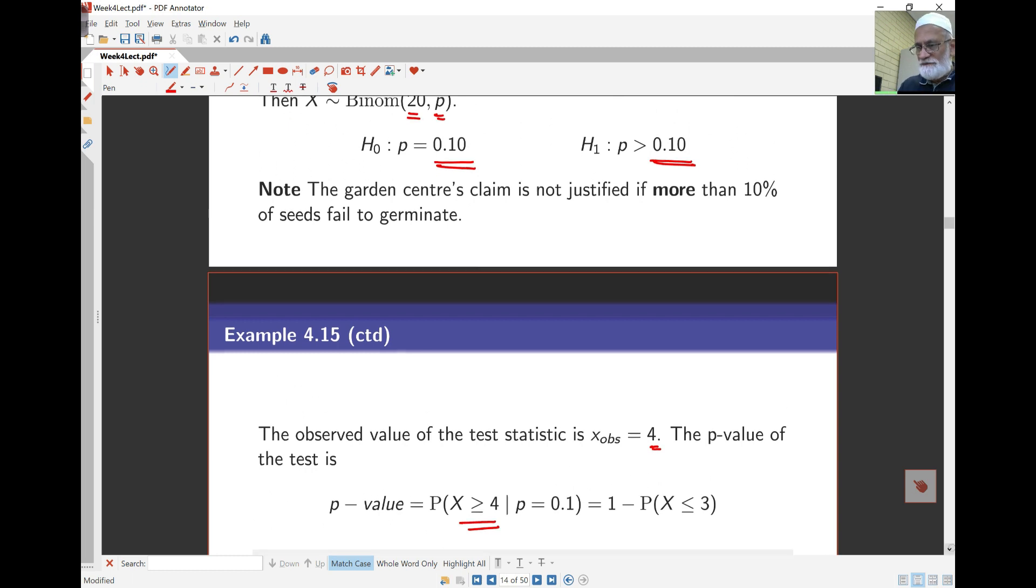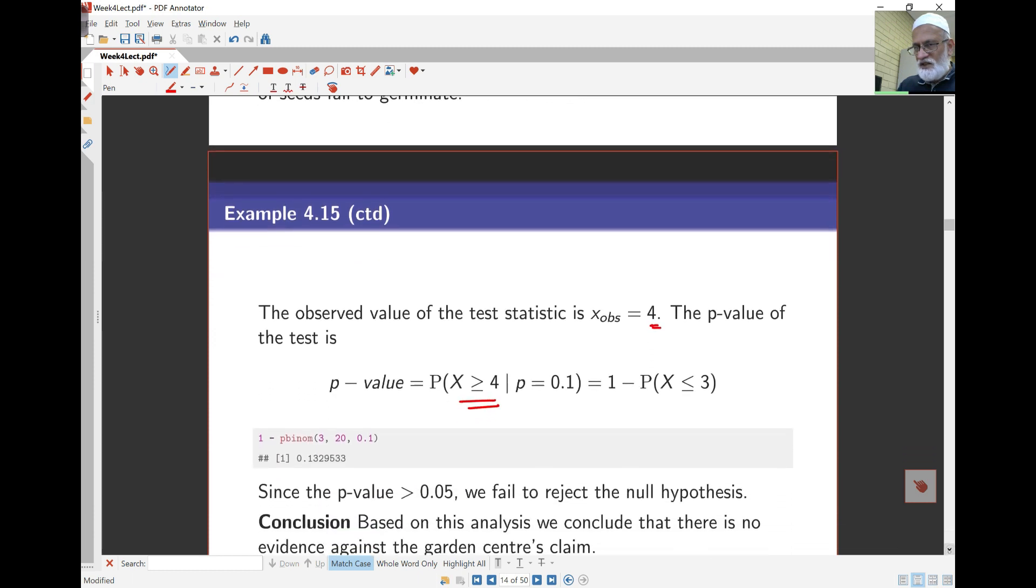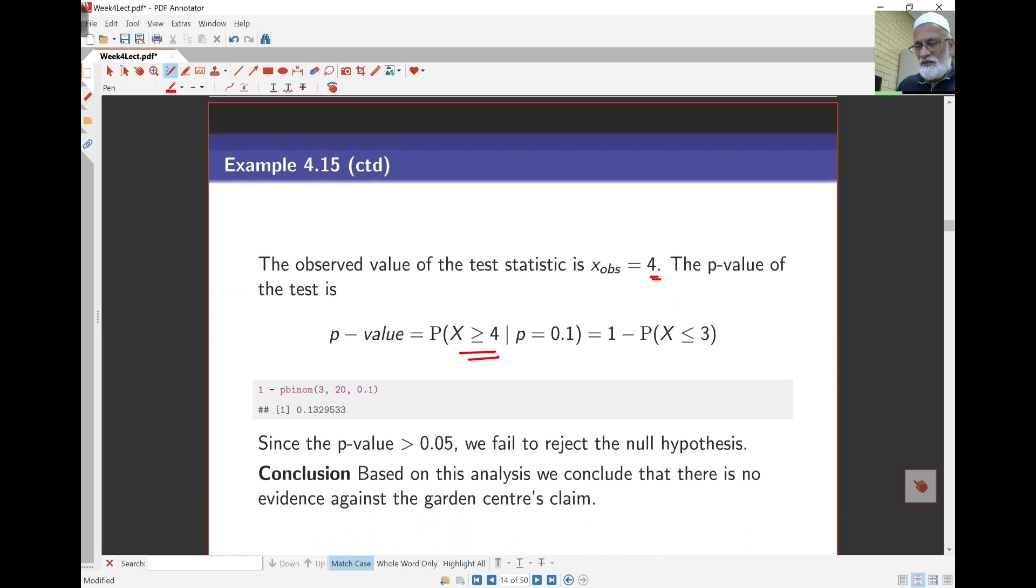This is under the assumption that 10% of seeds don't germinate. If the garden center's claim is correct, what is the probability that 4 or more seeds don't germinate? This equals 1 minus probability of X less than 3, and we get 0.1329 from R.